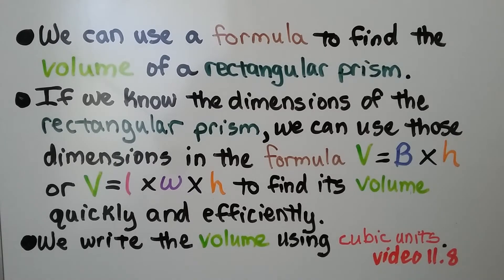We can use a formula to find the volume of a rectangular prism. If we know the dimensions of the rectangular prism, we can use those dimensions in the formula. V equals B times H, for volume equals base times height. Or, V equals L times W times H, that's length times width times height, to find its volume quickly and efficiently. We write the volume using cubic units.